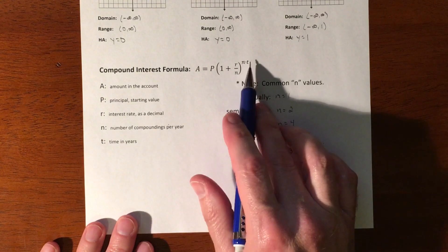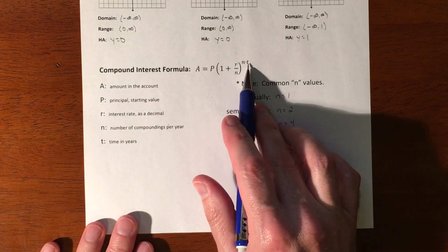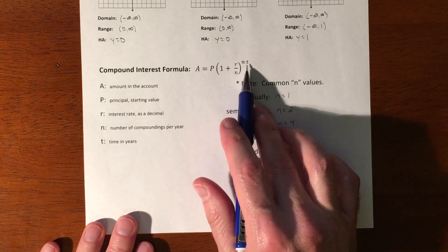n also plays a role in your exponent. Together, the n and the t—which is your time—that's the total number of times you're going to compound something.